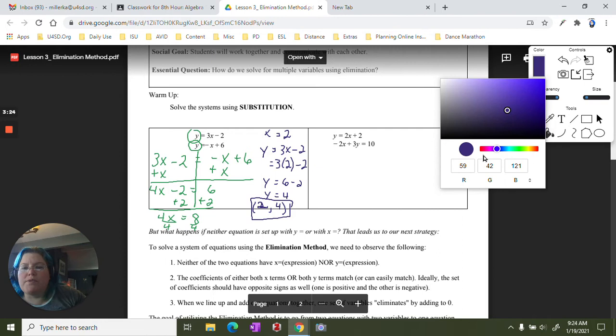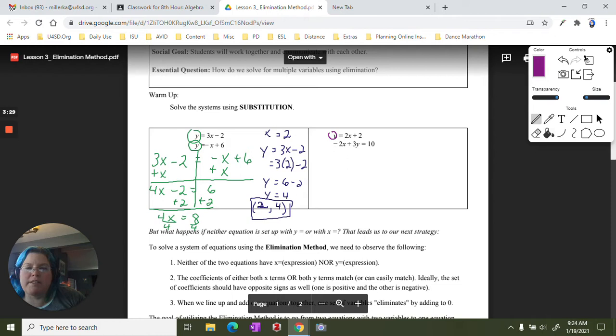Now, we can use the substitution method here. So here we have y equals 2x plus 2, and then we have negative 2x plus 3y equals 10. So what I am going to do is replace my y with the 2x plus 2 equals 10.